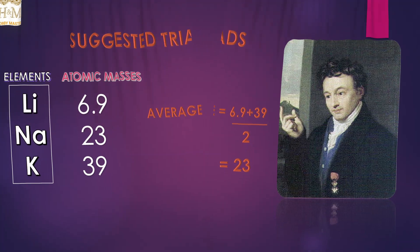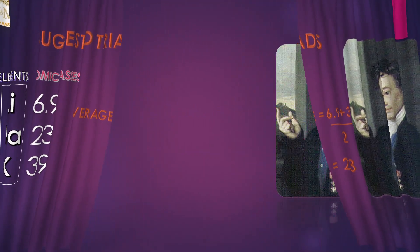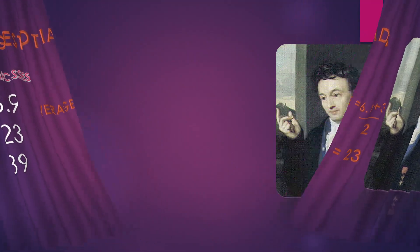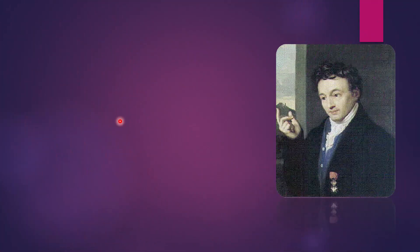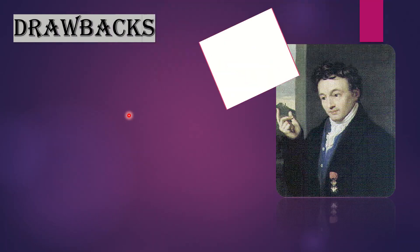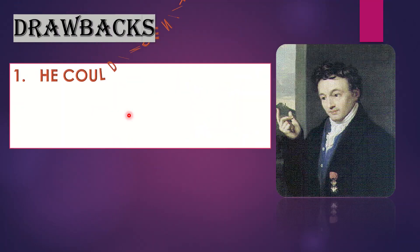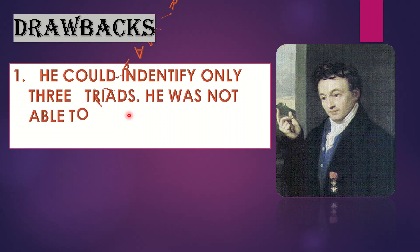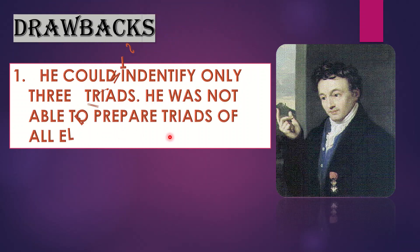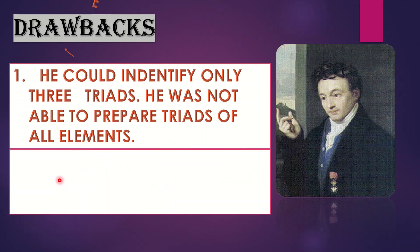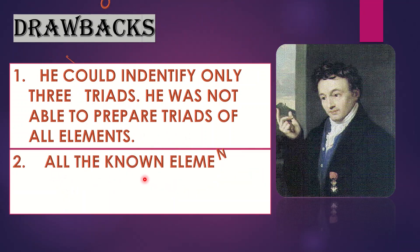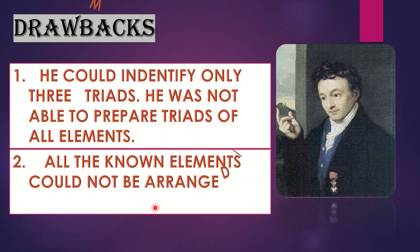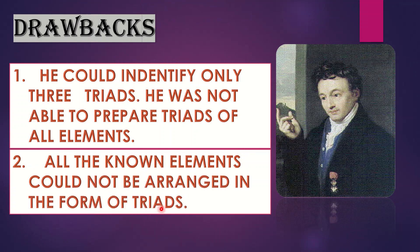However, it is not a perfect method of classification because Döbereiner's triads had drawbacks. He could identify only three triads and was not able to prepare triads for all elements. All the known elements could not be arranged in the form of triads.